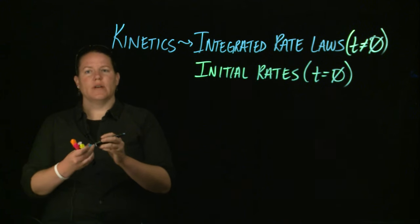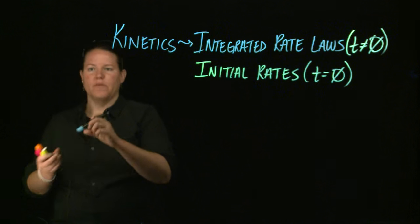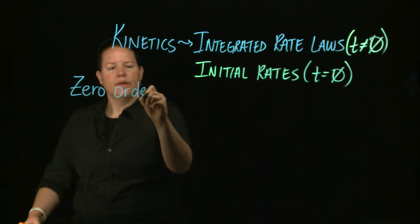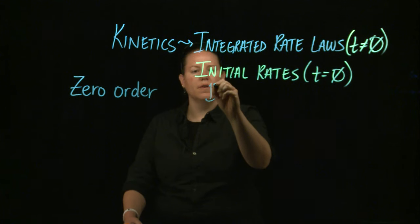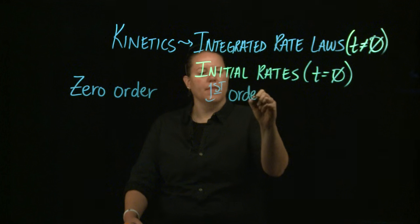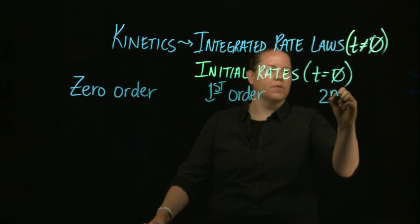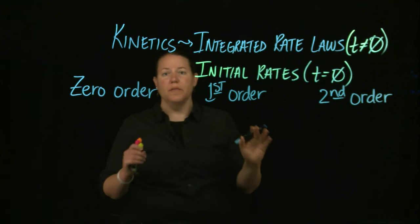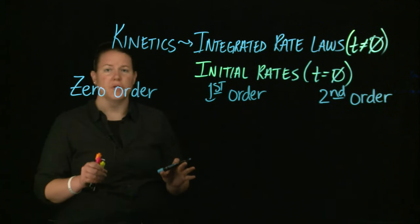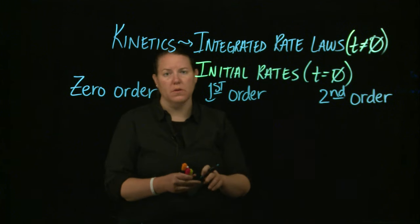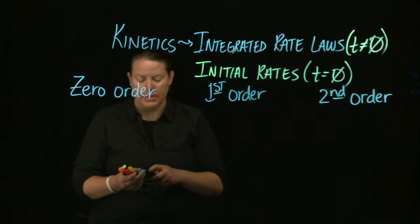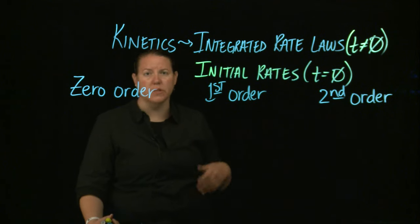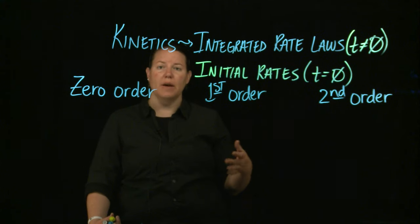Now we're only going to look at three integrated rate laws: the zero order, first order, and second order. And this is kind of a big deal because these are the three that can fit a straight line. Anything higher than second order overall is a more complex deal. You have to do some perhaps differentiation, some differential equations, or some complex integration in order to make that happen.